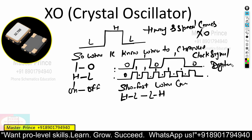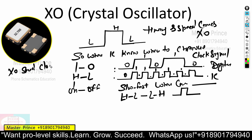This timing and speed comes from the XO. The XO sends a clock signal to the digital IC or microcontroller. Through this clock signal the IC gets to know when to go logic high, when to go logic low, what the sequence is, and what the timing difference is between each switching event.